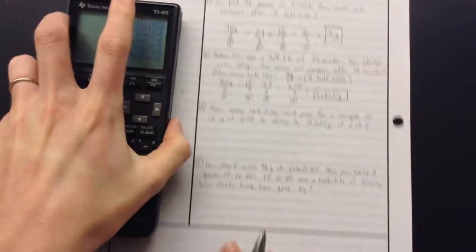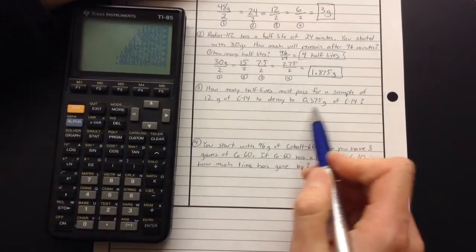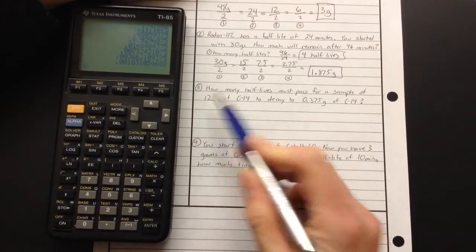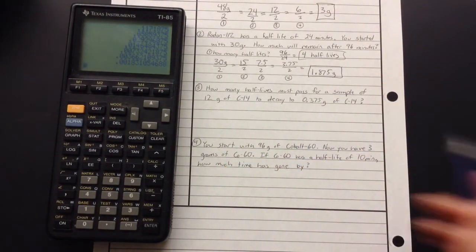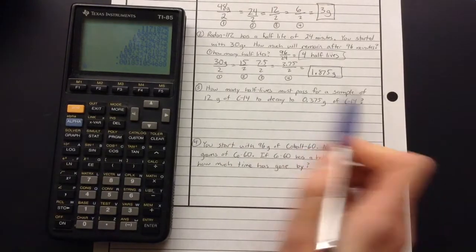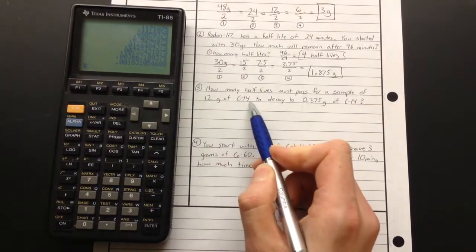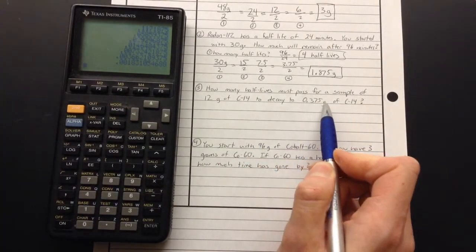So let's try the opposite way. What if we have a sample, and we know how much we started with and how much we end with. Can we figure out how many half-lives went by? How many half-lives must pass for a sample of 12 grams of C14 to decay to 0.375 grams?